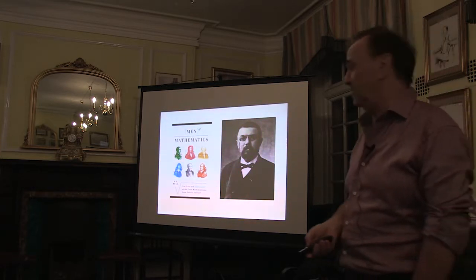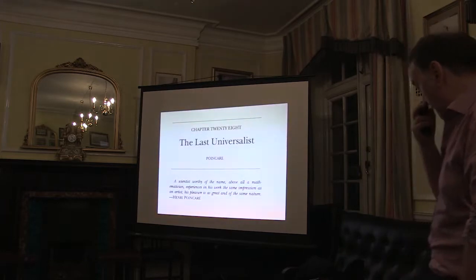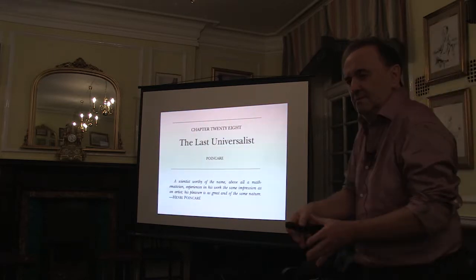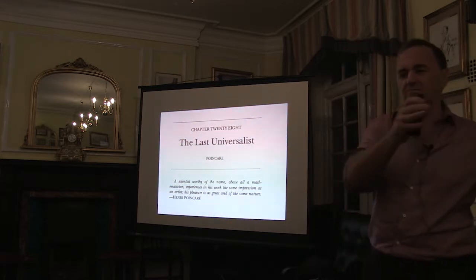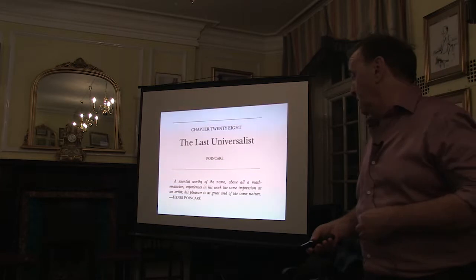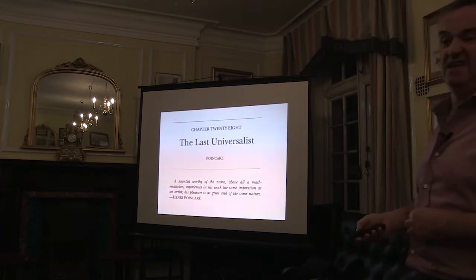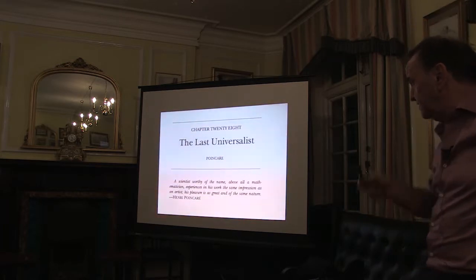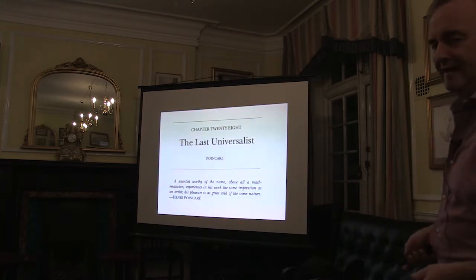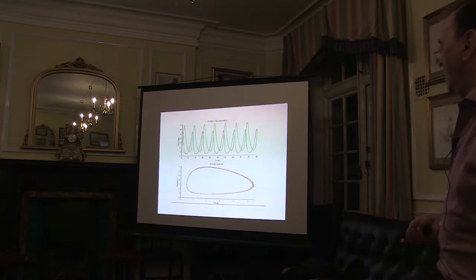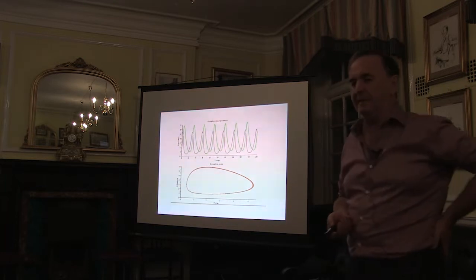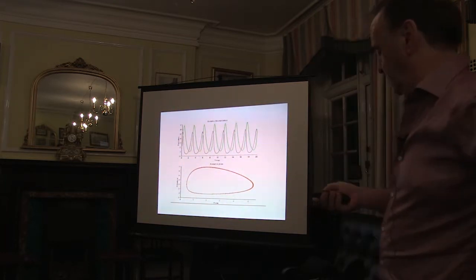Poincaré is well known and is touted in the book as the last great universalist — meaning he worked across a whole range of subjects, from pure analytical mathematics all the way to applied science. Nowadays they say that maths is too broad a church for anyone to work in all areas. One of the things Poincaré did was work on phase planes.